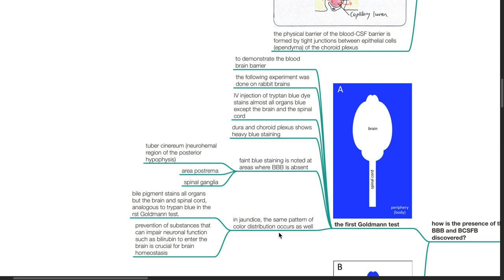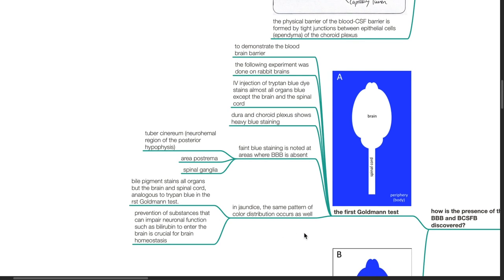In jaundice, the same pattern of color distribution occurs as well. Biopigment stains all organs but the brain and spinal cord, analogous to trypan blue in the first Goldmann test. Prevention of substances that can impair neuronal function such as bilirubin to enter the brain is crucial for brain homeostasis.